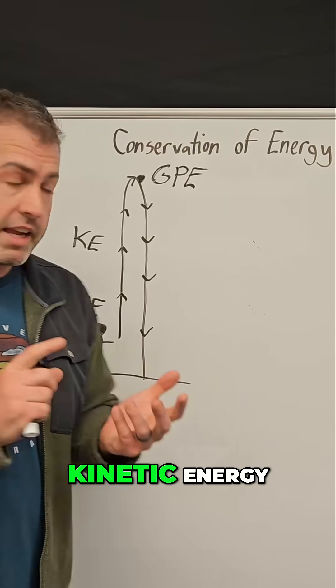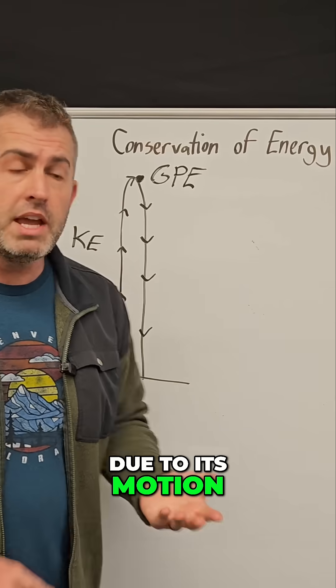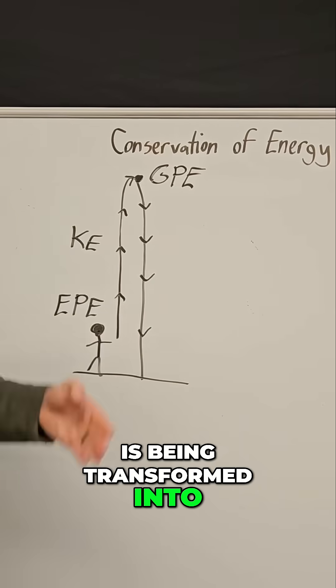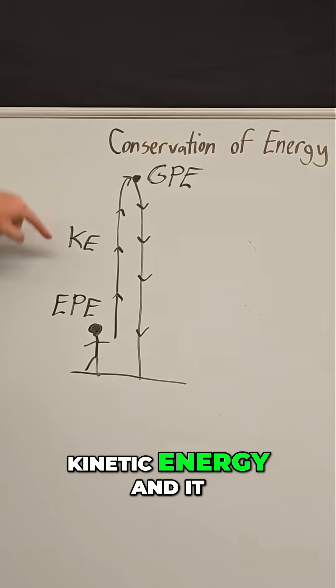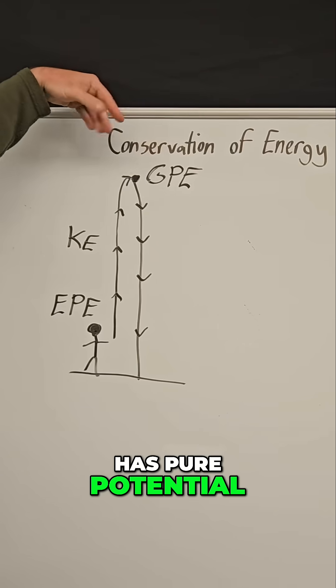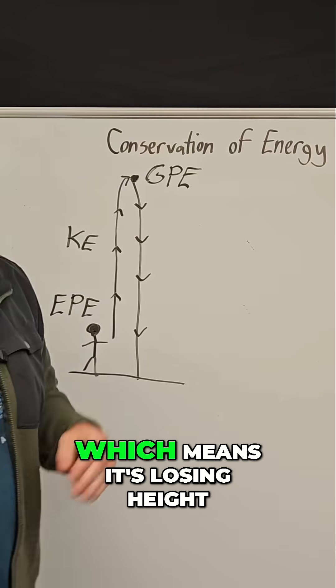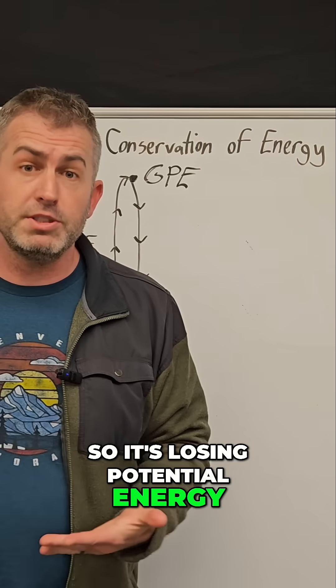And that's because that kinetic energy, due to its motion, is being transformed into potential energy due to its height. At some point, it has no more kinetic energy and it has pure potential. But then it starts to fall again, which means it's losing height, so it's losing potential energy.